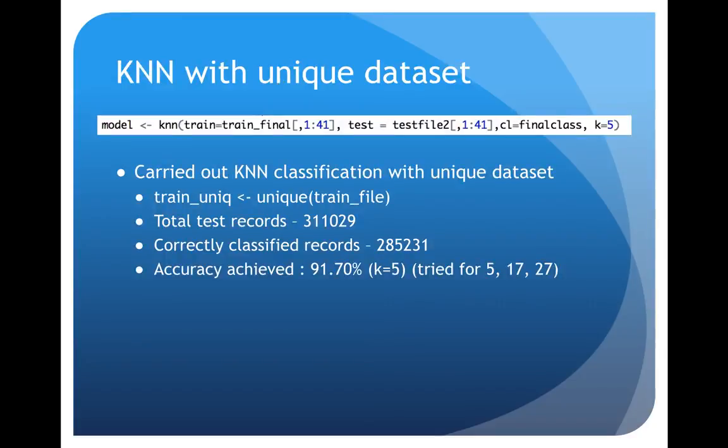Next I tried to deal with the redundancy factor. I tried to run the KNN model on the unique dataset, removing all the duplicate records. With this I got about 91.7% accuracy which was really good. I could identify 285,231 records correctly. I tried KNN for different values of K but I got the highest accuracy for K equal to 5.